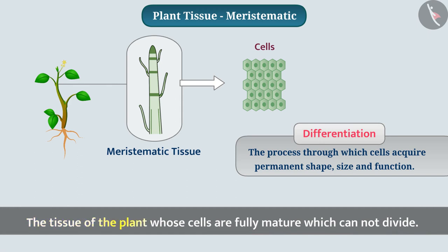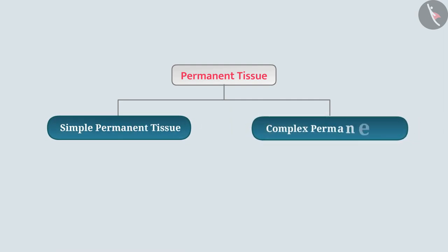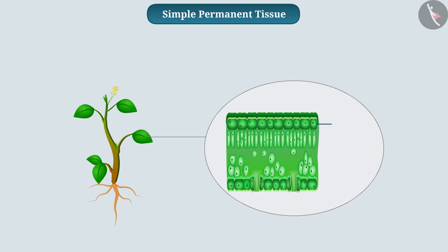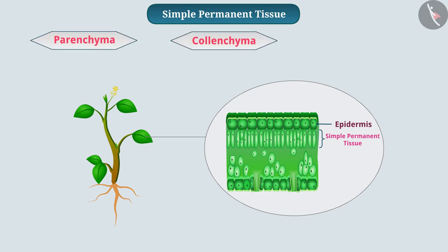The tissue of the plant whose cells are fully mature and which cannot divide is called permanent tissue. Permanent tissue is of two types: simple permanent tissue and complex permanent tissue. Let us learn about the plant's simple permanent tissue in detail. Tissue that is made up of only one type of permanent cells that perform the same function is called simple permanent tissue. According to function, simple permanent tissue is classified into parenchyma, collenchyma, and sclerenchyma.